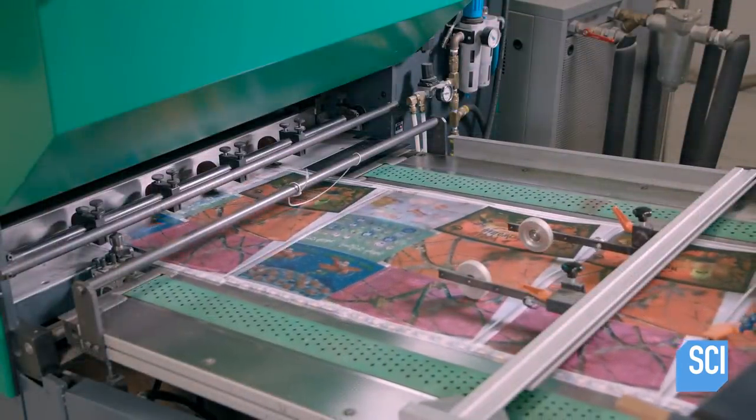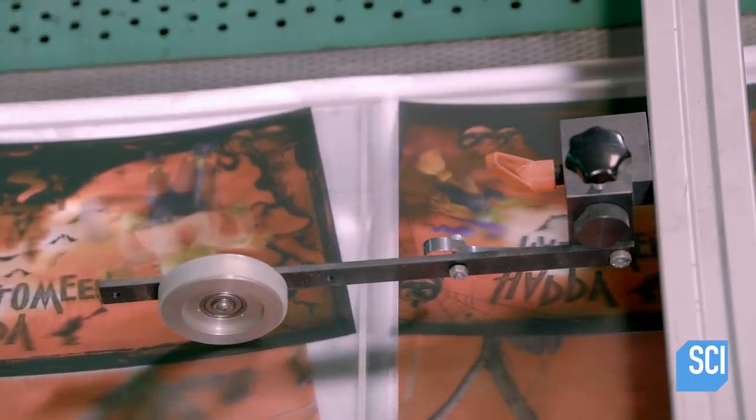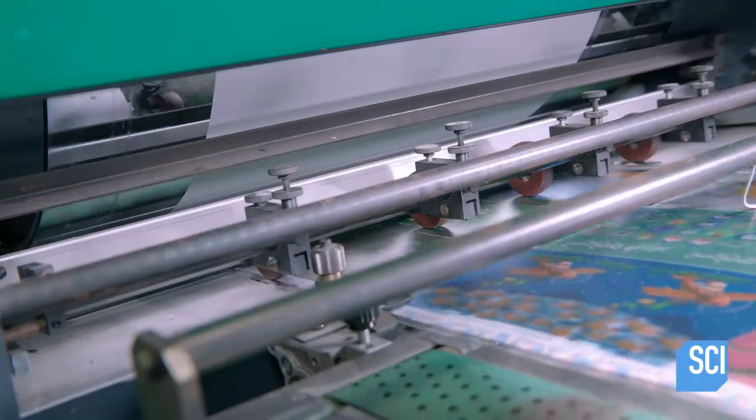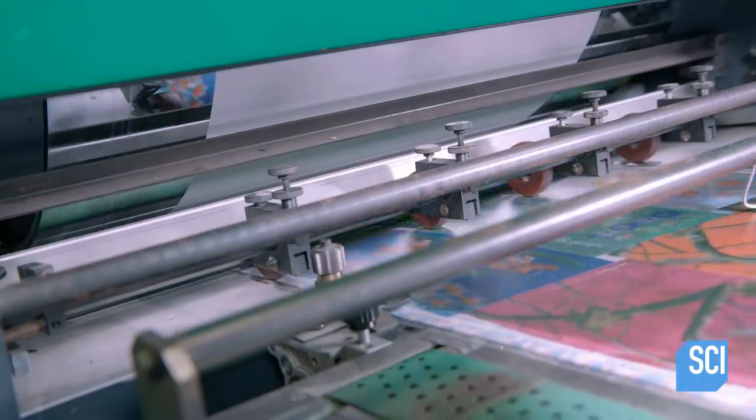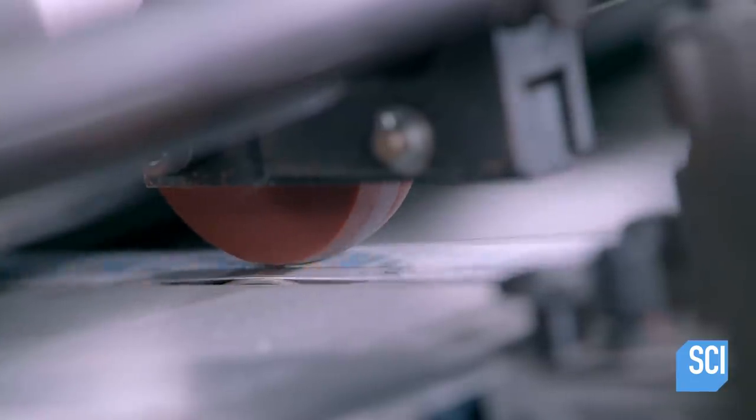The 3D printed sheets now head into a laminator. It applies a white film to the artwork. This film will protect the 3D images during the cup molding process.